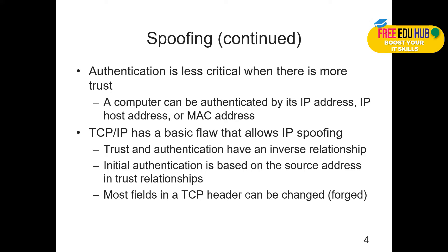TCP/IP has a basic flaw that allows IP spoofing. Trust and authentication have an inverse relationship. Initial authentication is based on the source address in the trust relationship — if the source address is the same and packets are sent back, the router trusts the other computer and a relationship is established.